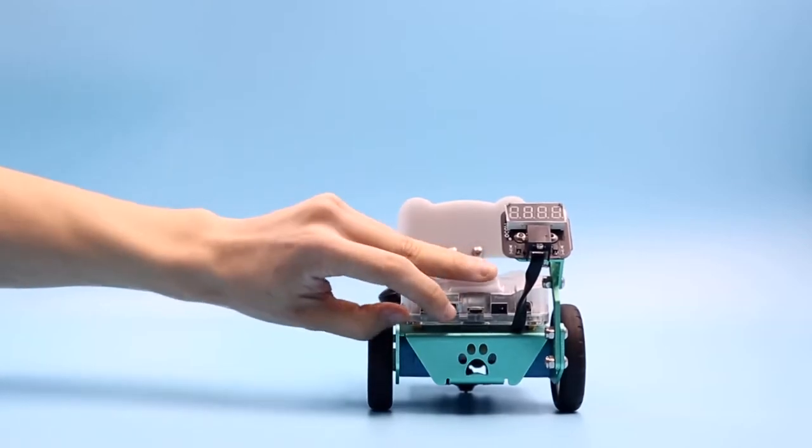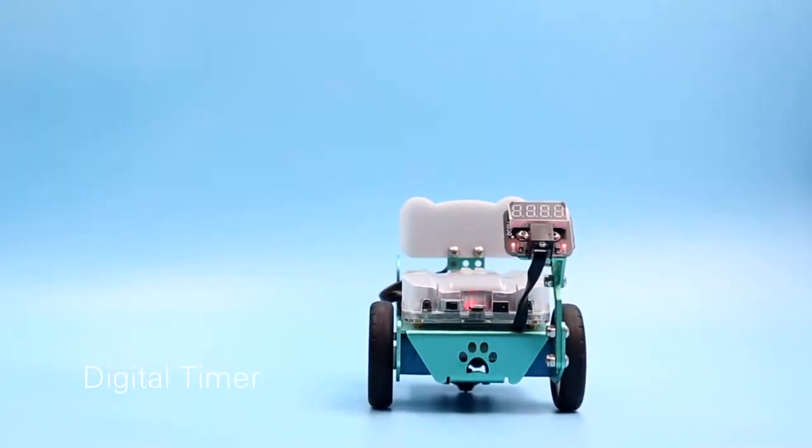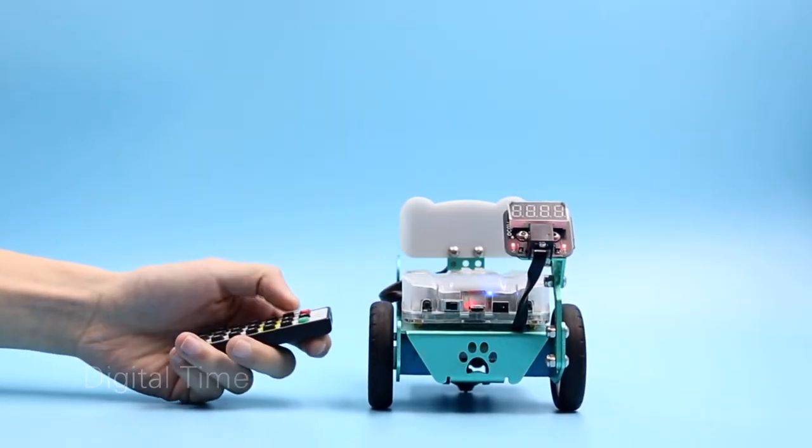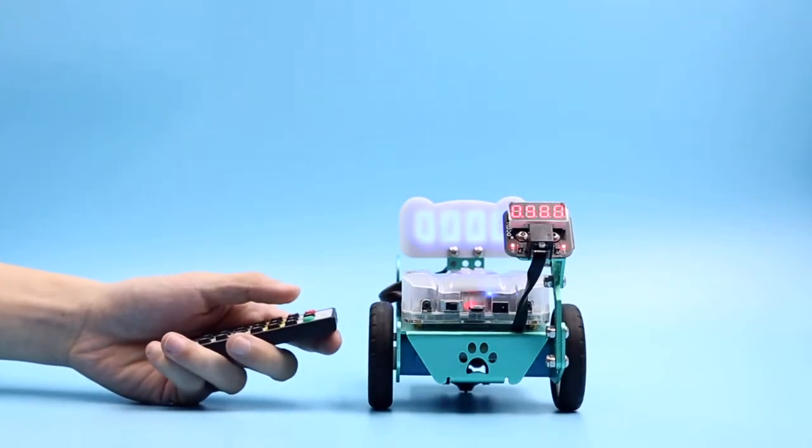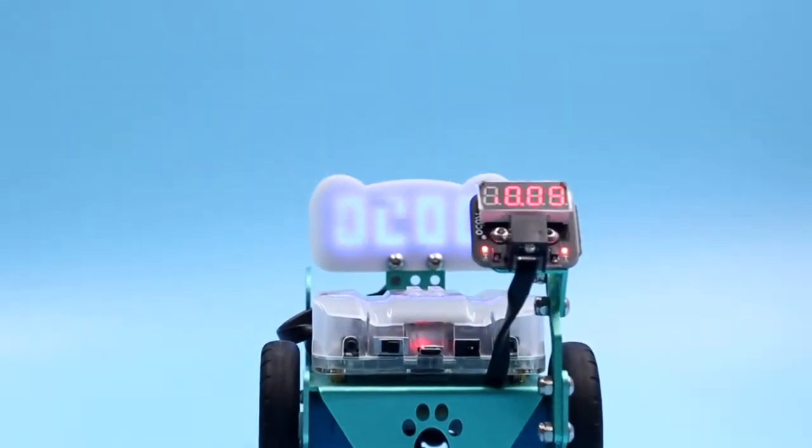You can transform Mio into a digital timer by using the digital tube module and expression panel in extension package A. It will do a lot for you. Trust me.